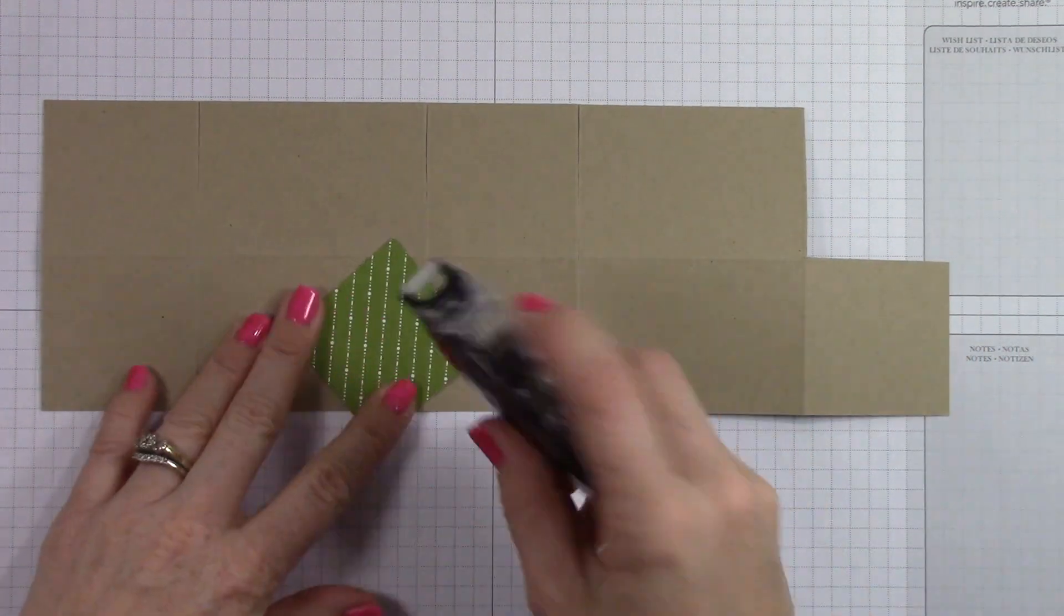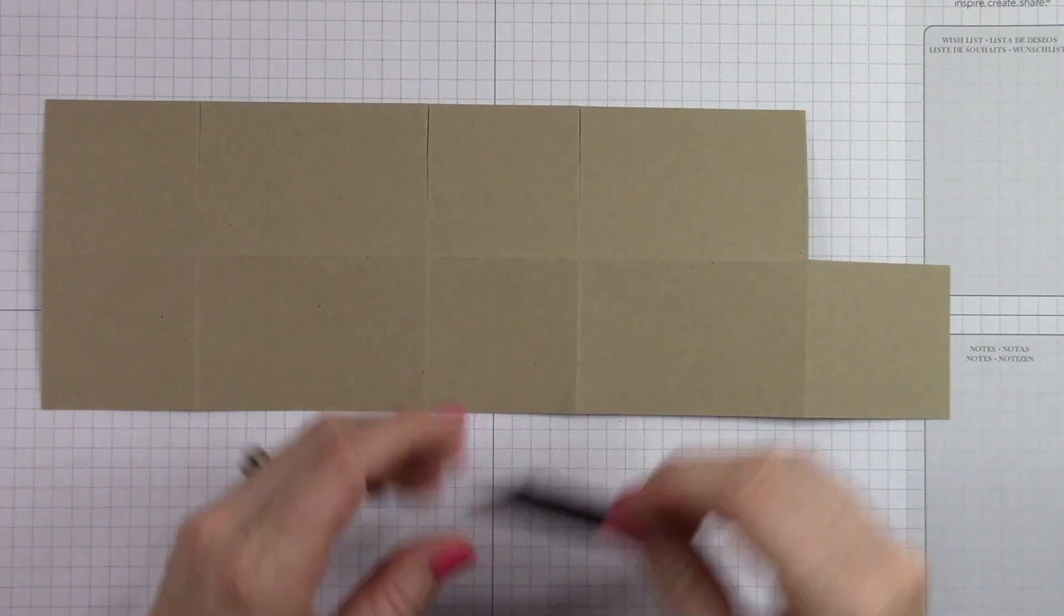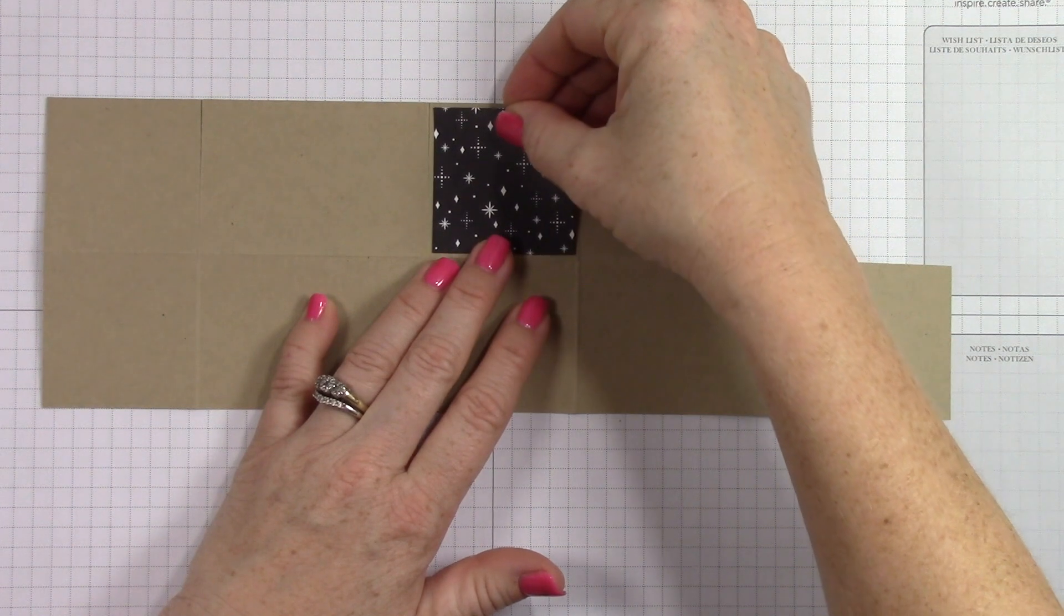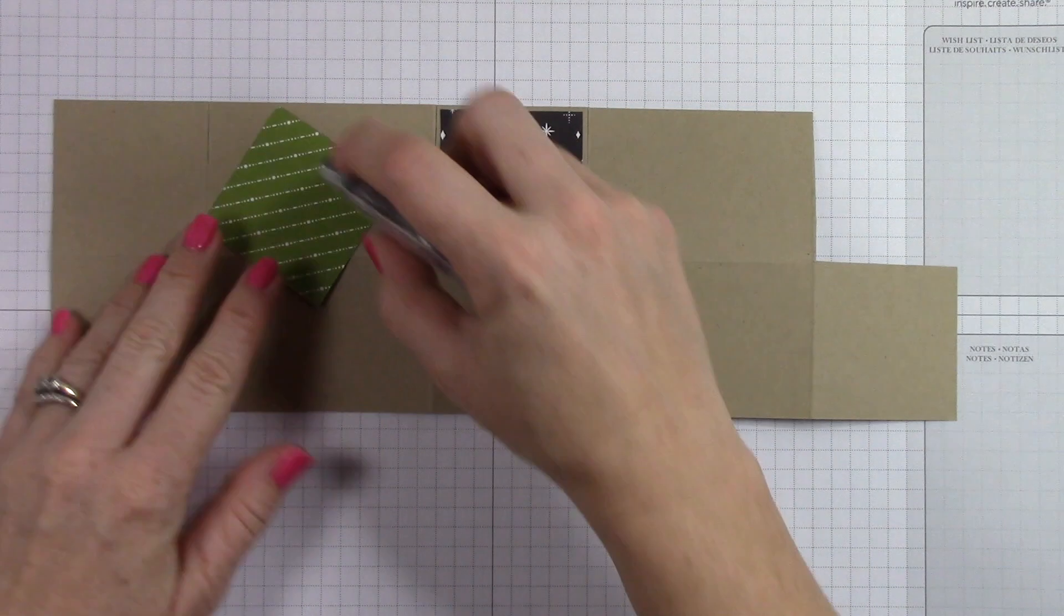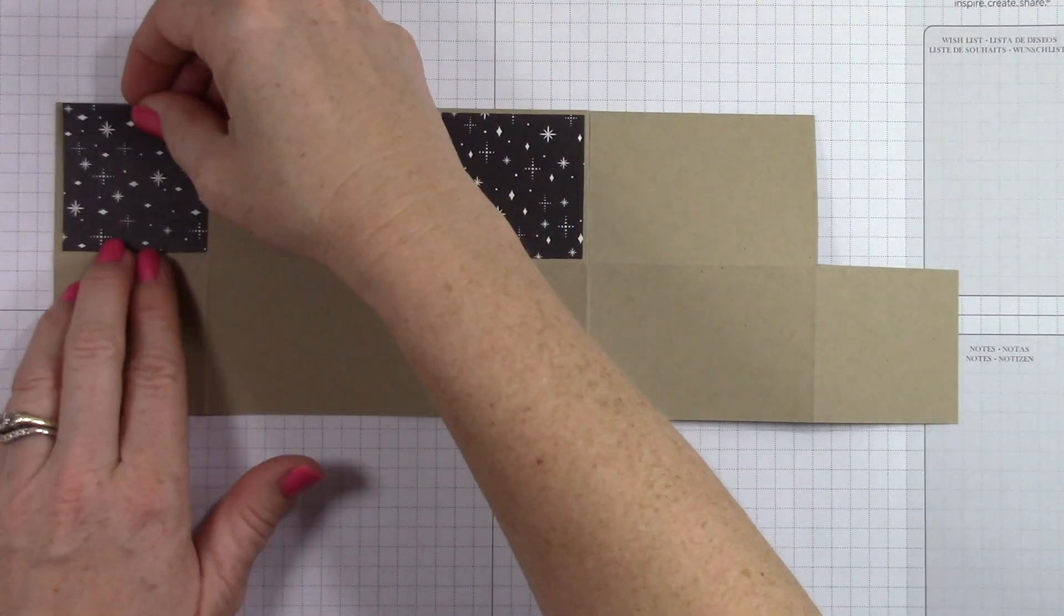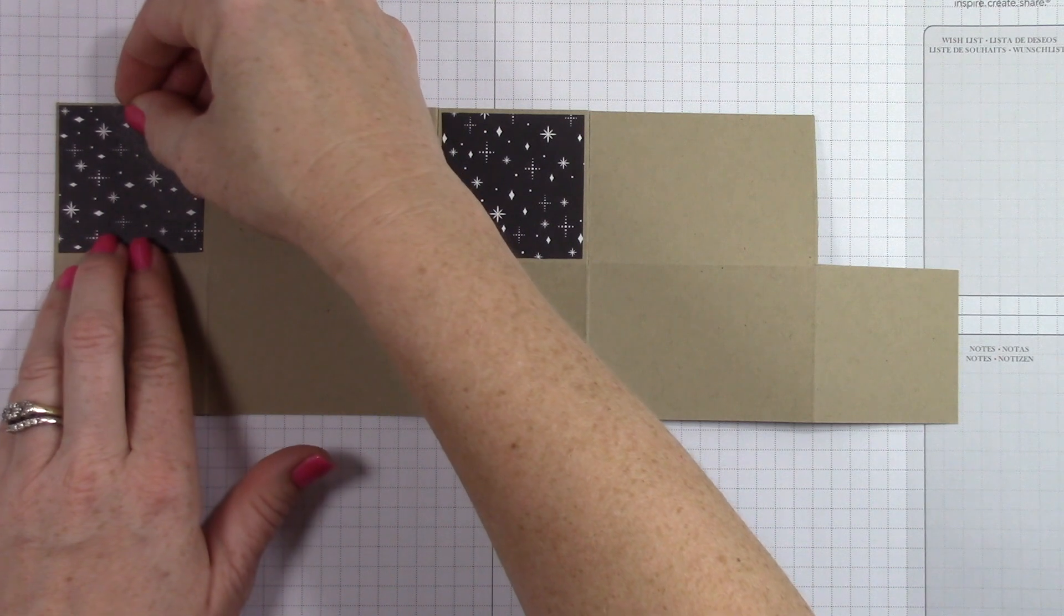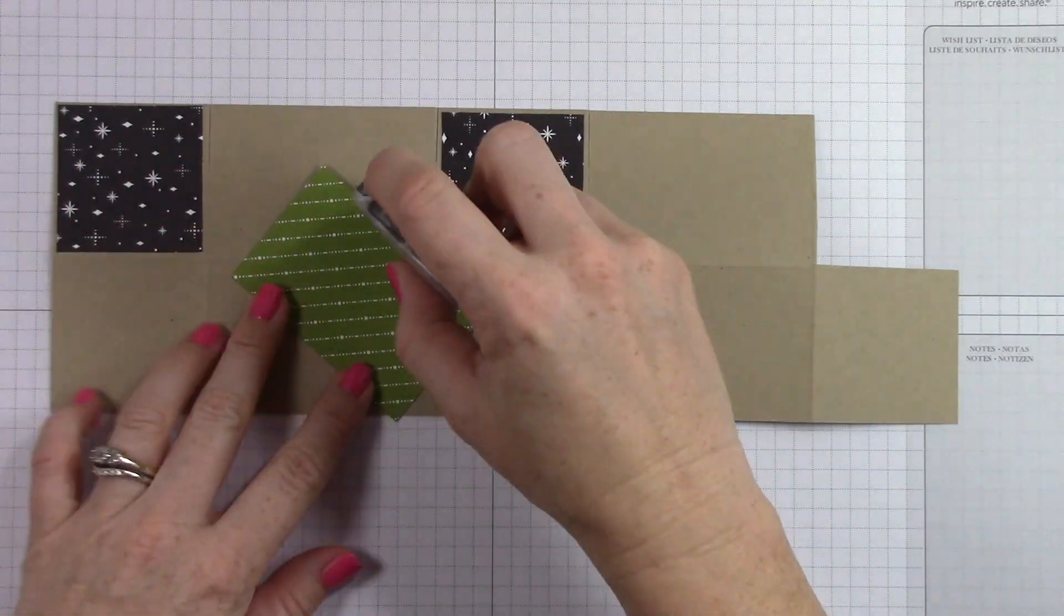So now I'm going to adhere all of my layers. I needed two layers that were cut at one and seven eighths by one and seven eighths, and four pieces that were cut at two and seven eighths by one and seven eighths. So now I'm just going to adhere all of those down.